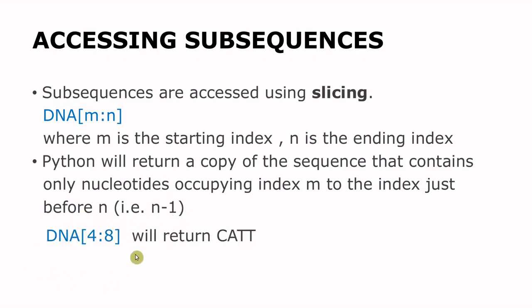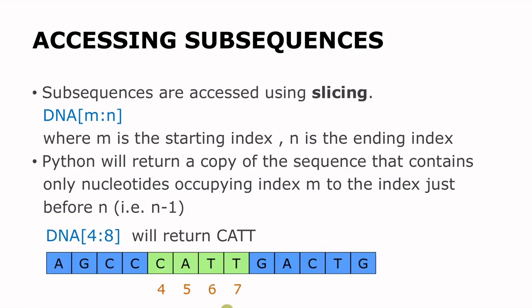So if you have the query DNA[4:8], it is going to return CATT, because four is the starting index, eight is the ending index. Python will ignore eight but rather end at N minus one, which is seven, hence C, A, T, T — which are occupying indexes four, five, six, and seven respectively.